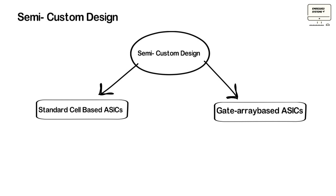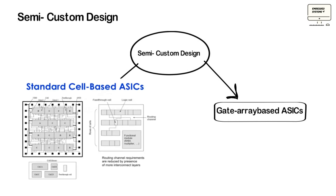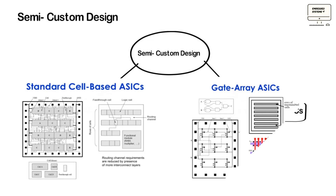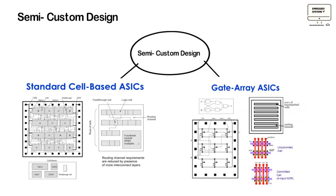There are basically two types of semi-custom ASICs: standard cell based ASICs and gate array based ASICs. For standard cell based ASICs, the mask is a custom design but the silicon is made up from library components. This gives a high degree of flexibility, provided that standard functions are able to meet the requirements.